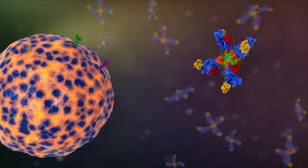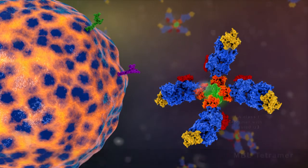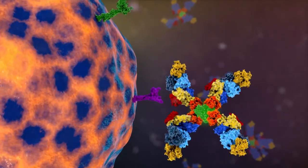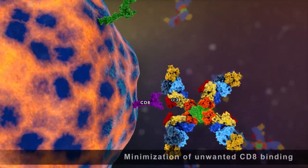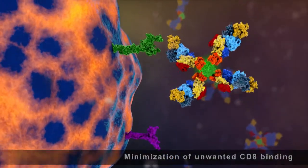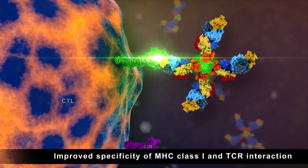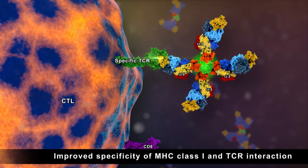MBL's HLA class I tetramers have a mutation in the HLA class I heavy chain alpha-3 domain that minimizes unwanted binding to CD8 molecules and dramatically improves specificity. This patented technology provides superior detection of desired T-cell populations.